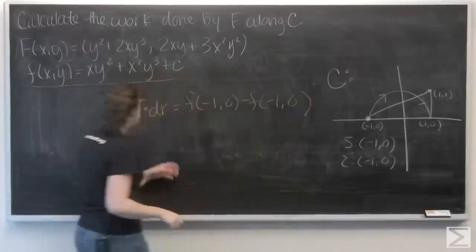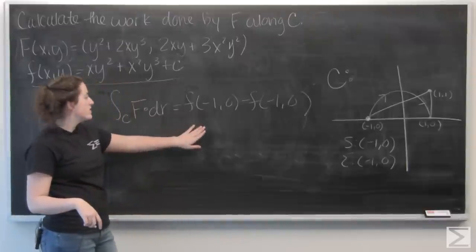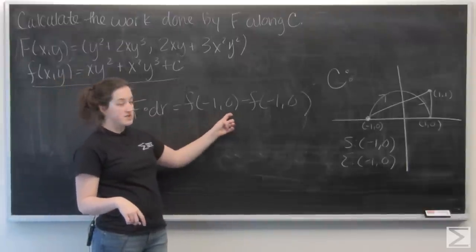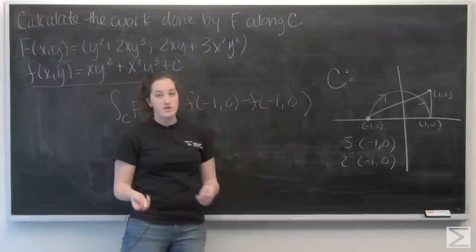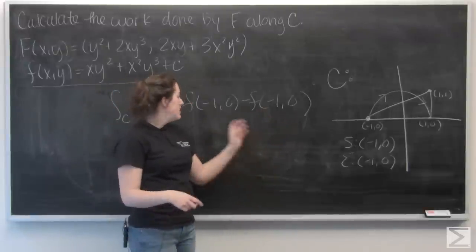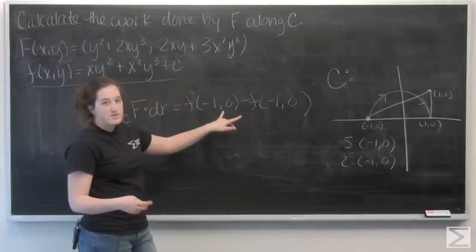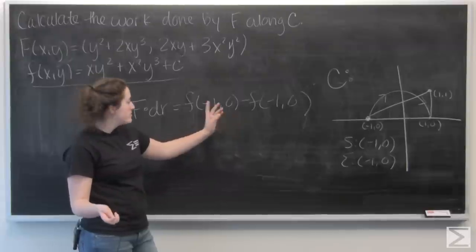So I have that this line integral is going to equal the function value at negative 1, 0, the end point, minus the function value at negative 1, 0, which is also the start point. And you can plug these in, but they're just going to be the same, so I'm going to get 0.